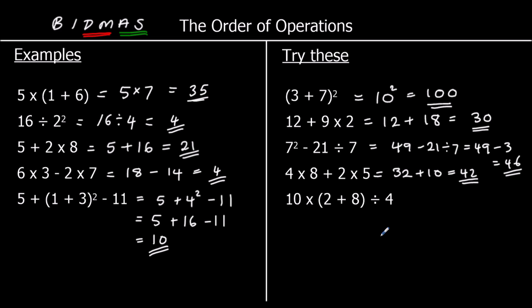And the last one: we've got brackets, so we do that first — 2 plus 8 is 10. So we've got 10 times 10 divided by 4. We have division and multiplication, so we do that from left to right: 10 times 10 is 100, and 100 divided by 4 is 25.